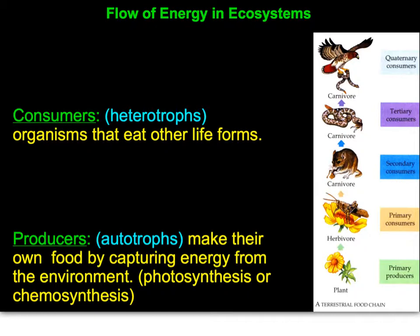Two terms we've been using a lot in this video are consumer and producer. Our consumers are our heterotrophs, and our producers are our autotrophs, making their own energy. There are two different ways in which they can do that: through photosynthesis, which we've talked about a lot, or chemosynthesis, which we haven't really talked about much. So let's dive into those two and explain the difference between them.